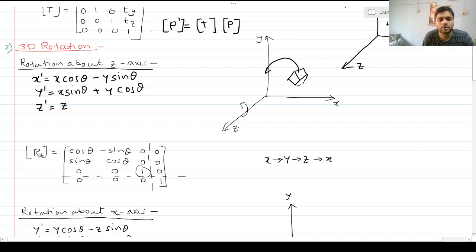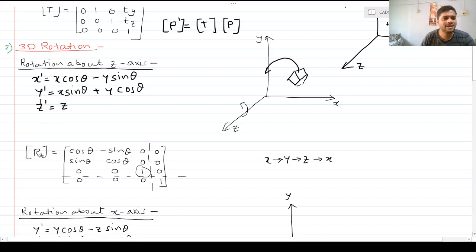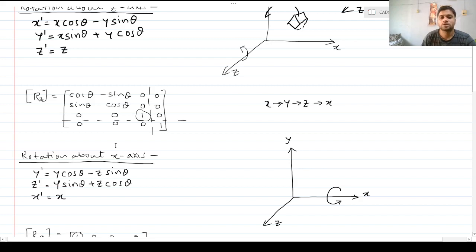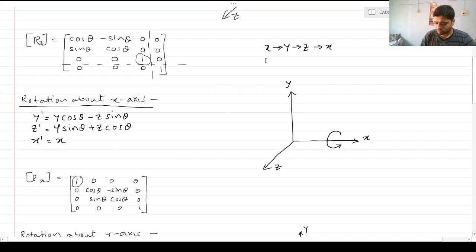If you concentrate on the 3×3 portion of this matrix, it is exactly the same as the 2D rotation matrix — we just added a row and column for homogeneous coordinates. In a way, 3D rotation about an axis is a 2D phenomenon in the plane perpendicular to that axis, with the rotation axis itself remaining unchanged. This concept continues as we find rotation about the next axes. The sequence follows a cycle: Z → X → Y → Z...